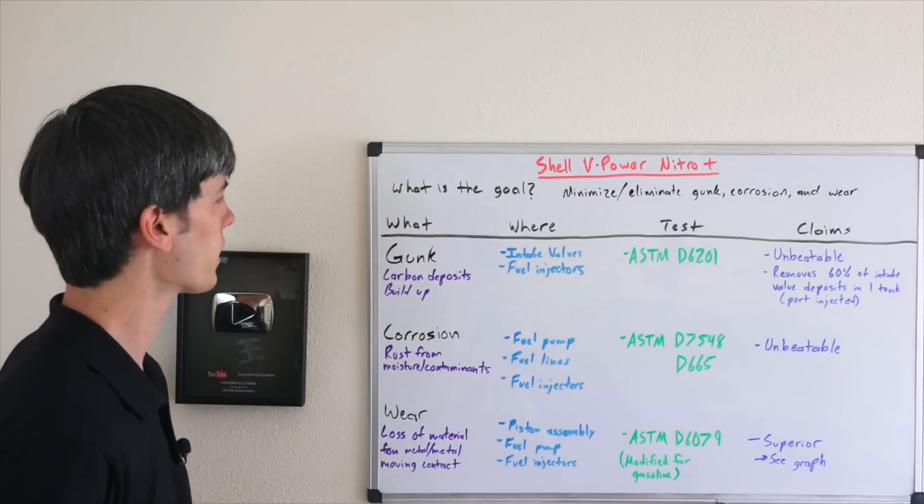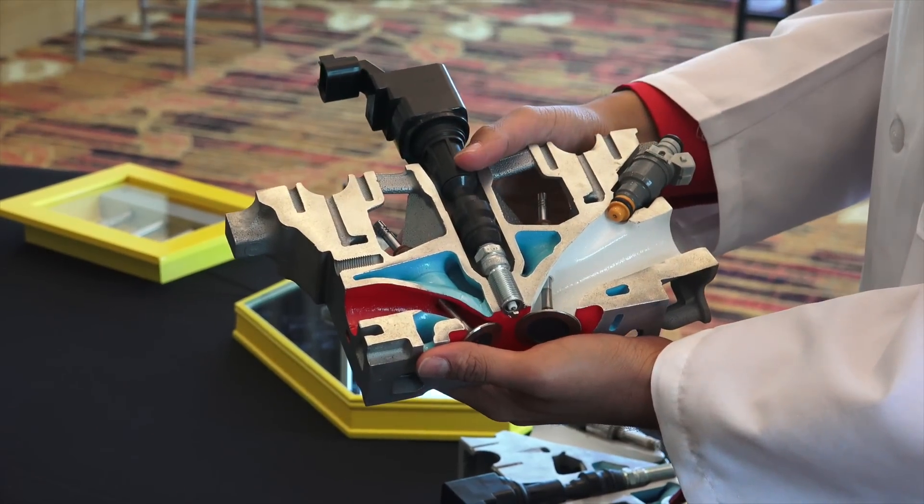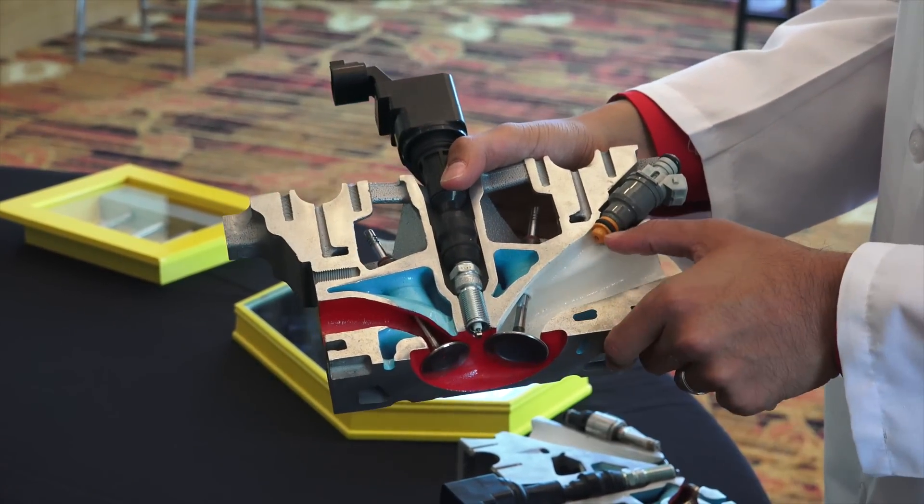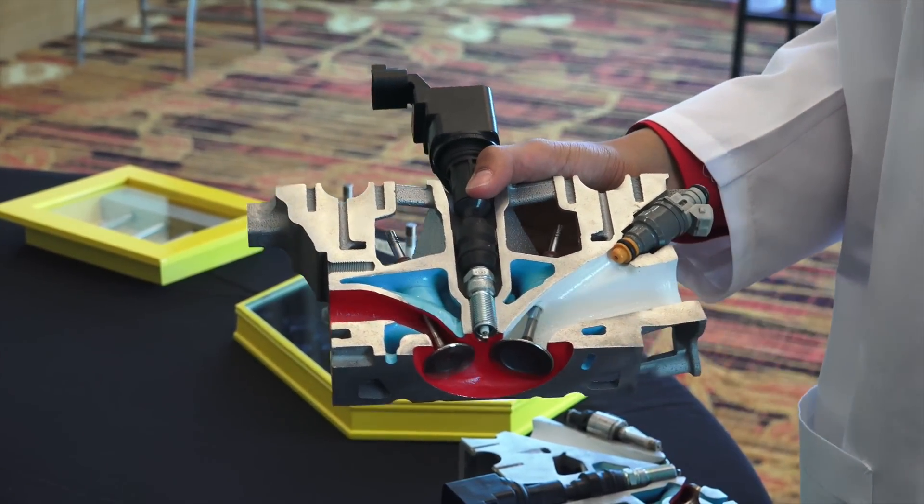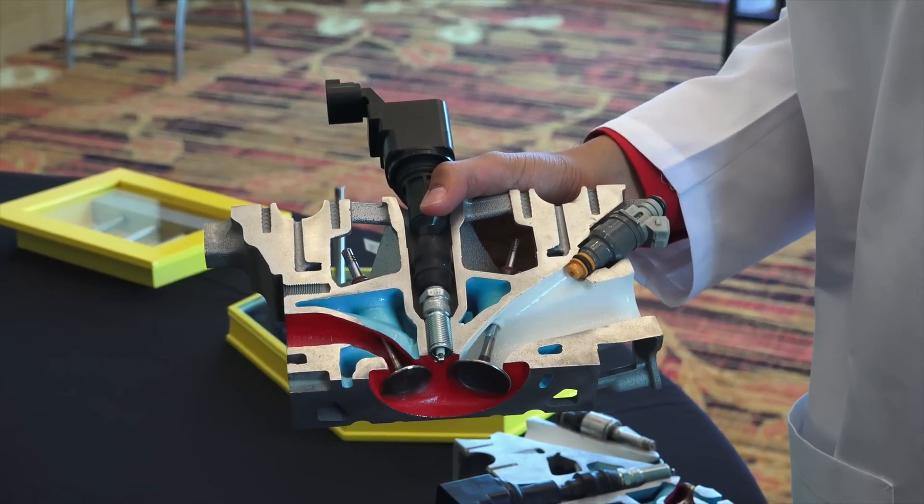Starting with the first one: gunk. Gunk is essentially just carbon deposits that build up within your engine, and so these can occur on the intake valves, on the fuel injectors, can also occur on the pistons.